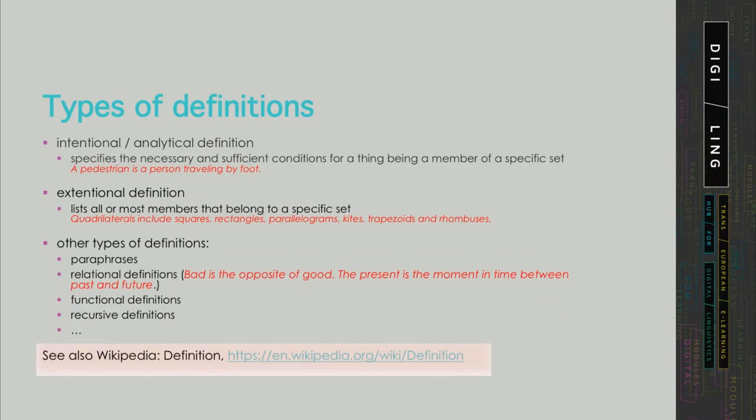There are different types of definitions. The most common and formalized type is the intentional definition, which specifies the necessary and sufficient conditions for a thing belonging to a specific set. Another type is the extensional definition, which lists all members belonging to a specific set. Yet other types include paraphrases, defining by specifying the relation of a concept to its opposite or to some other concept, or defining by function.